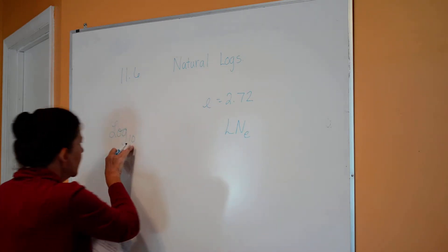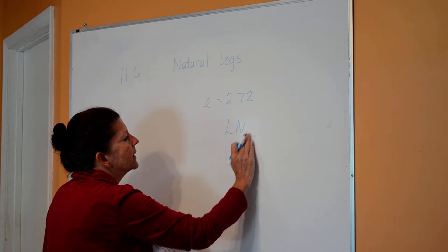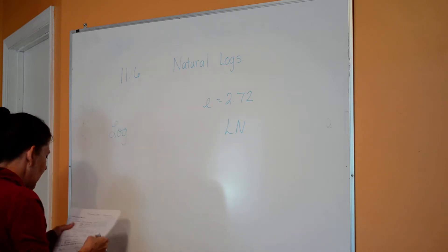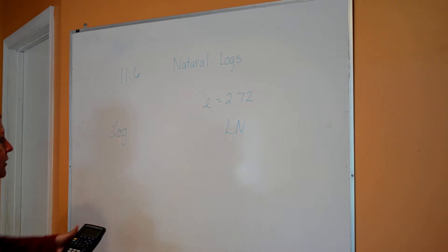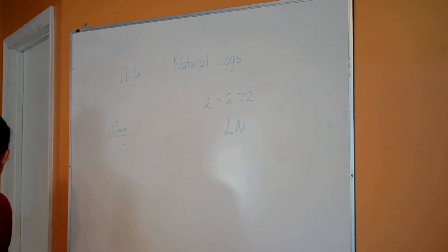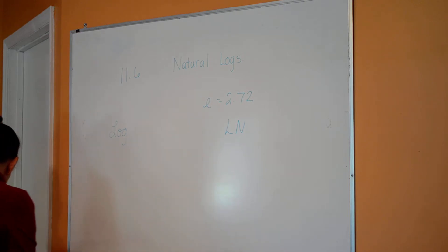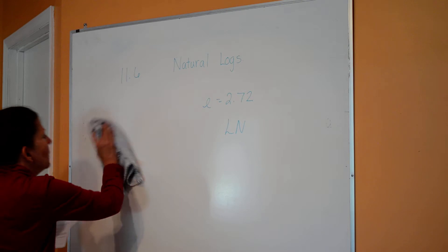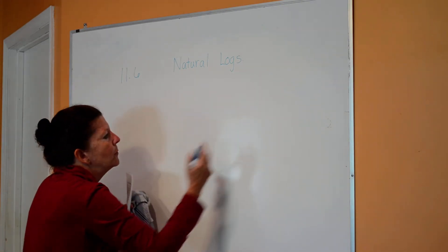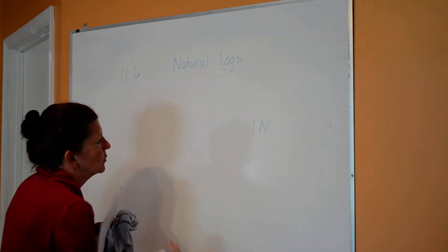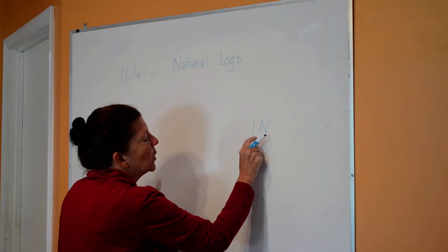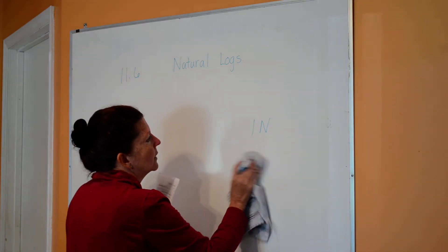We don't write the 10 on common log and we don't write the E on natural log. You do have a button on your calculator that is LN, which is underneath the log button. You also have an inverse natural log, just like you had inverse common log. In the book, be careful because LN almost looks like IN — that lowercase L is why it looks like an I.